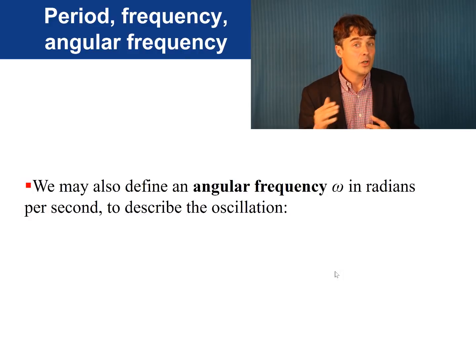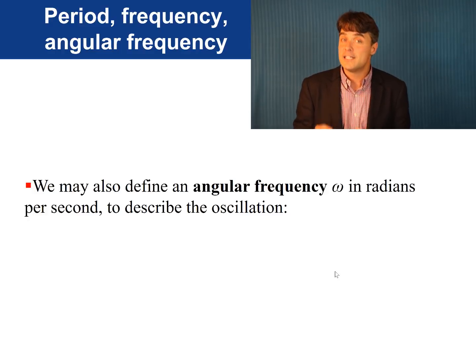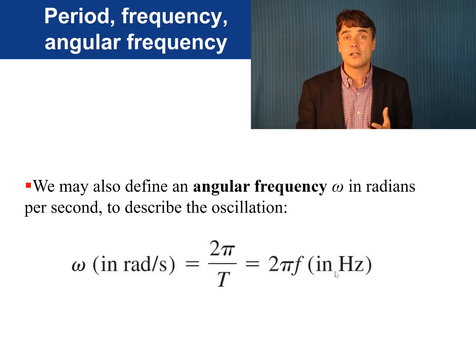And, when we get a little deeper into sinusoidal motion, we're going to find it useful to define a different kind of frequency. It's still the frequency, but the units are different. This is called the angular frequency, and it's defined as the regular frequency multiplied by 2 pi.